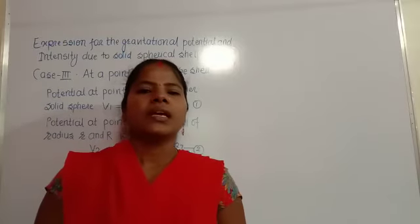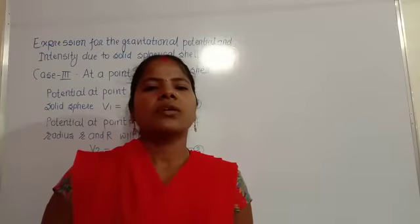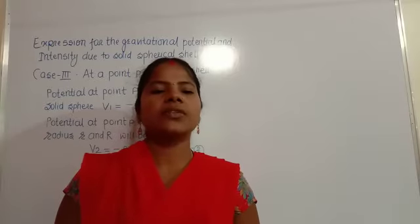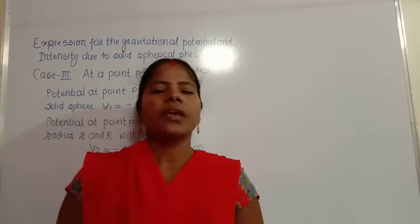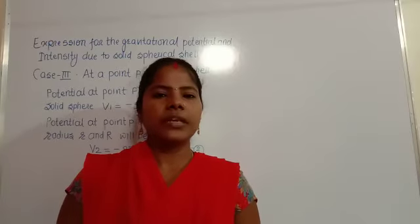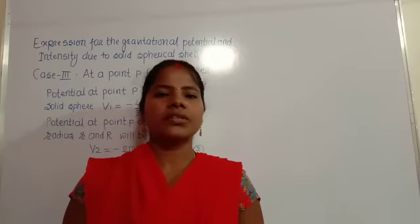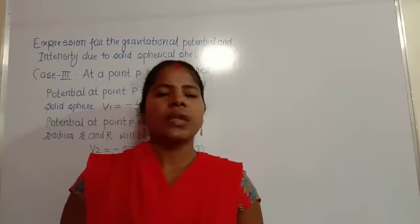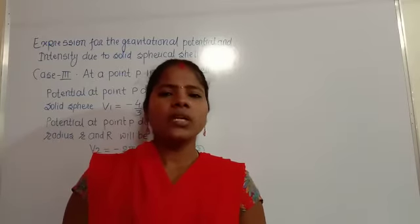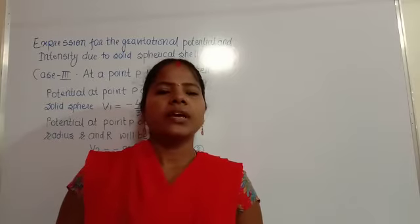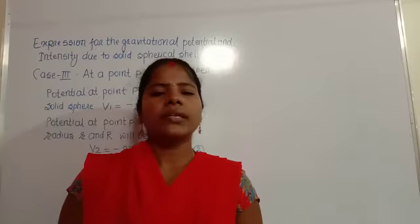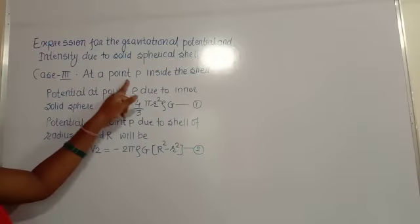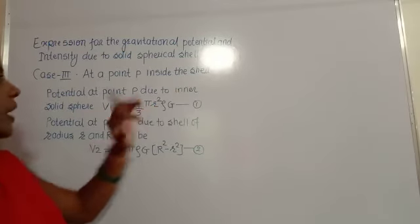Hello, good morning. In the previous class we were continuing the expressions for the gravitational potential and gravitational intensity due to a solid spherical shell. We already studied Case 1 and Case 2, and we are continuing here with Case 3, where we calculate the potential at a point P inside the shell.